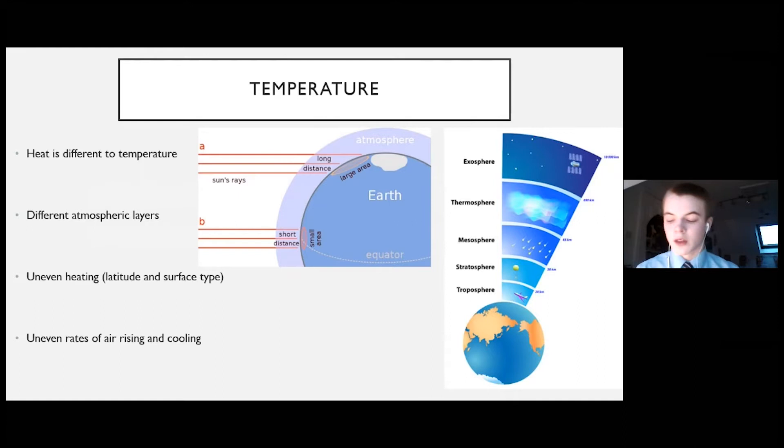First is temperature. Interestingly, heat is different to temperature. Heat is the energy that can be spread over a large or small volume. Heat in a small volume creates a high temperature. So, air high in the atmosphere is at lower pressure and therefore higher volume and therefore heat is absorbed over a larger volume of air. So, we have different temperatures at different altitudes in the atmosphere, which causes us to have different atmospheric layers.